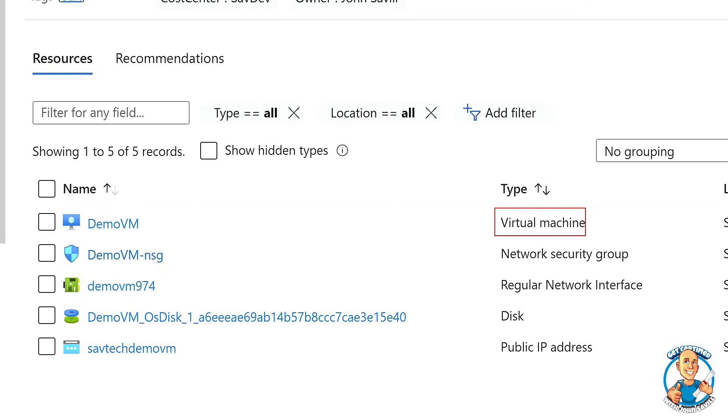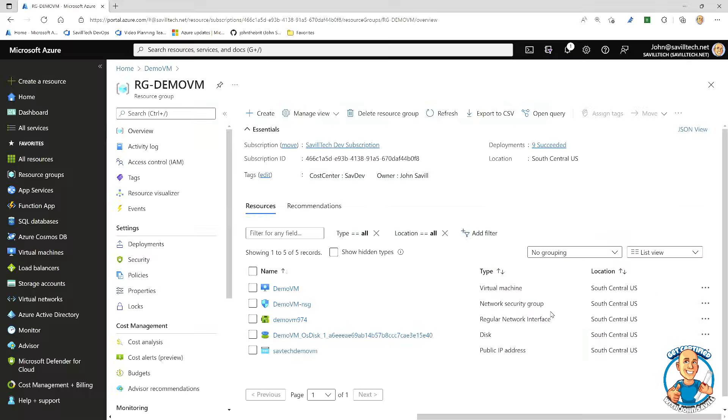Yes, I can see I have the virtual machine. Then we can see I have a network interface. Then we can see I have an OS disk. I also have an optional public IP. And I have a network security group that I'm using with this virtual machine. If I had data disks, they would be separate resources as well. And you can see there's a whole combination of these available to me.